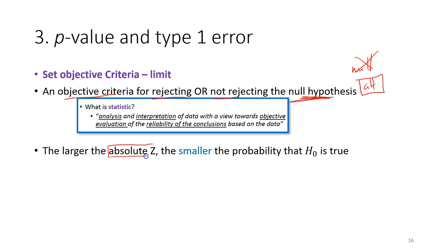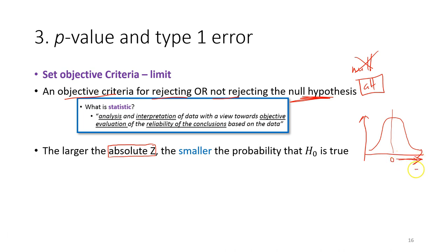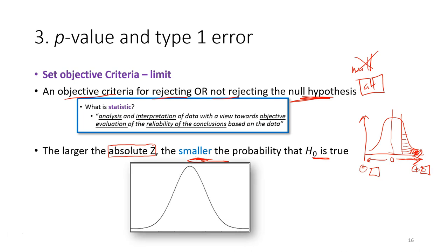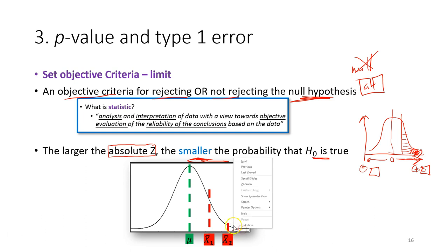From the previous lecture, we know that for a normal distribution, the larger the absolute z-value — where the center is zero, positive on one side and negative on the other — the smaller the probability. Towards the ends of the curve, the probability gets smaller. So a larger absolute z-value corresponds to a much smaller probability.